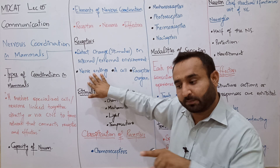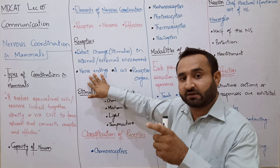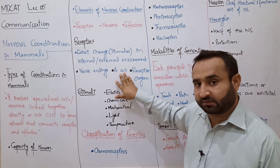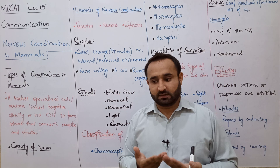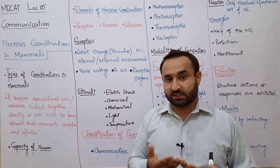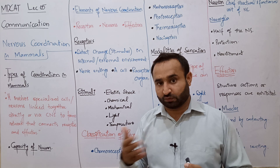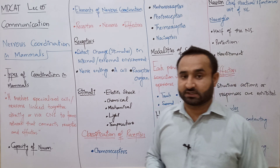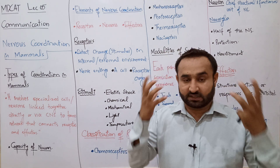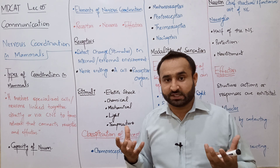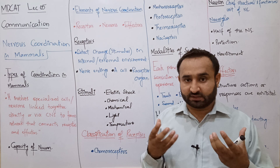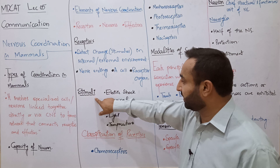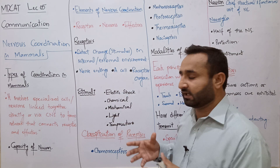Receptors مختلف اقسام کے ہو سکتے ہیں: free nerve endings (stray endings)، receptor cells جیسے آنکھ میں rod cells اور cone cells، یا پھر receptor organs جیسے پوری آنکھ یا کان۔ بہت سارے organs receptors کے طور پر کام کرتے ہیں۔ ہمارا body electric shock، chemicals، mechanical stimuli، light، اور temperature کو detect کر سکتا ہے۔